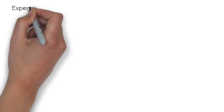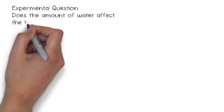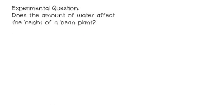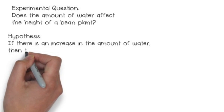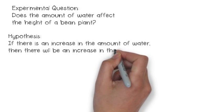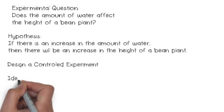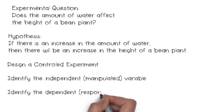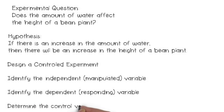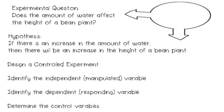So, how do you design a controlled experiment? Our experimental question is: Does the amount of water affect the height of a bean plant? Our hypothesis was: if there is an increase in the amount of water, then there will be an increase in the height of a bean plant. We need to identify the independent manipulated variable, the dependent responding variable, and determine the control variables. If we wrote our experimental question and hypothesis in the if-then format, we can clearly find the cause-effect relationship.